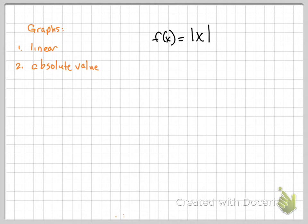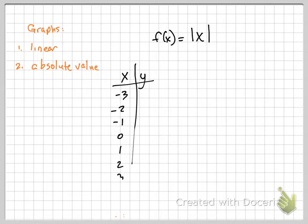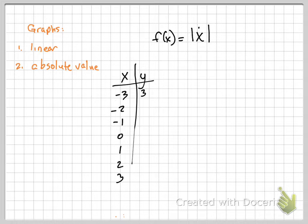So if I make an XY table, generally speaking when I'm not doing lines, I always start something like this and then I can adjust from there. If I plugged in a negative 3, what's the absolute value of negative 3? Positive 3. What does absolute value always do to a number? It's the distance from 0. The absolute value of negative 3 means how far is negative 3 from 0 on a number line — it's 3.